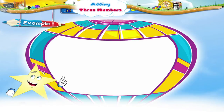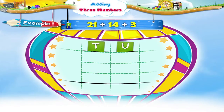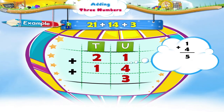Let us look at another example: twenty-one plus fourteen plus three. We first arrange them vertically, placing the units under the units and the tens under the tens. In the units place, one plus four equals five, and five plus three equals eight.